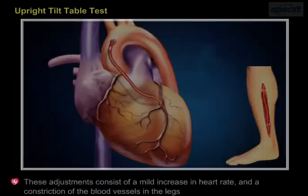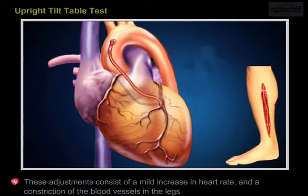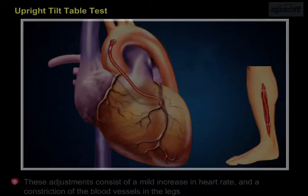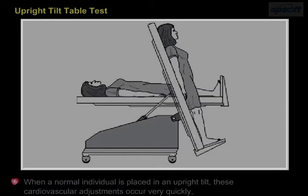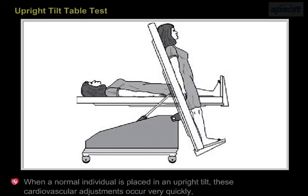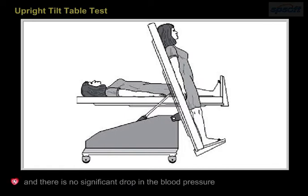These adjustments consist of a mild increase in heart rate and constriction of blood vessels in the legs. When a normal individual is placed in an upright tilt, these cardiovascular adjustments occur very quickly and there is no significant drop in the blood pressure.